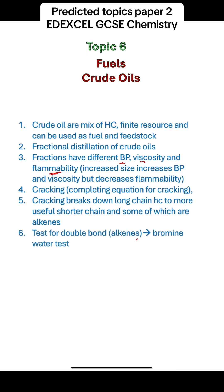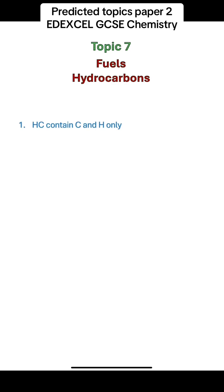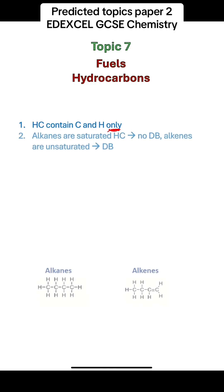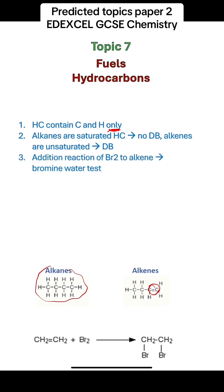You should know the test for the double bond in alkenes, which is the bromine water test, and remember the colour change in a positive test from orange to colourless. Hydrocarbons contain carbon and hydrogen only — don't forget the word 'only'. Alkanes are saturated hydrocarbons because they have no double bond, while alkenes have a double bond as their functional group, which is why they are unsaturated.